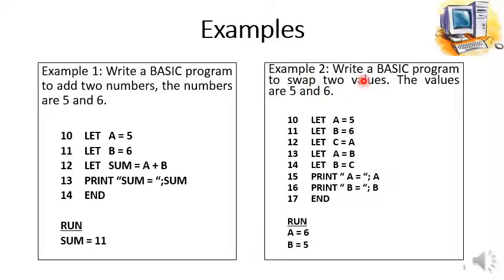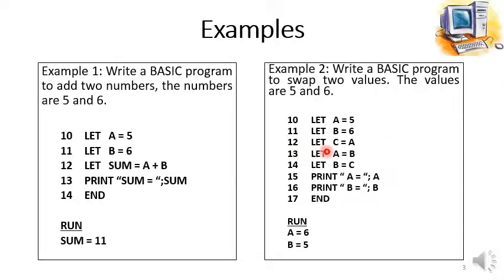Example 2: write a BASIC program to swap two values, five and six. We have 'let a = 5' and 'let b = 6'. We have to swap the values so that b will have the value five and a will have the value six. For this purpose, we need a third variable: 'let c = a'. Whatever the value of a, we assign variable a to variable c, so automatically the value five is stored inside c.